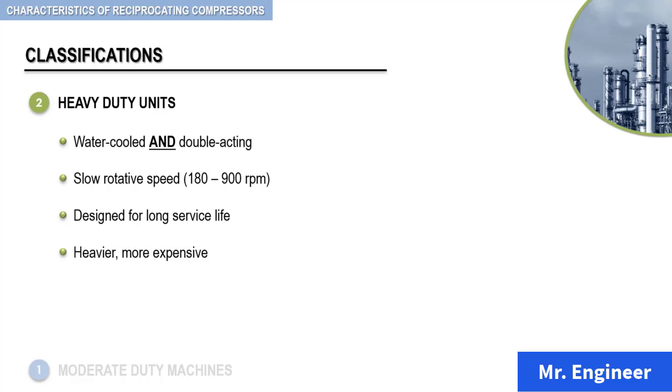They are also the most efficient of all compressors on a brake horsepower capacity basis, particularly at part loads due to their ability to be controlled effectively at part loads. We will see in detail how the capacity of these compressors is controlled in a later section.